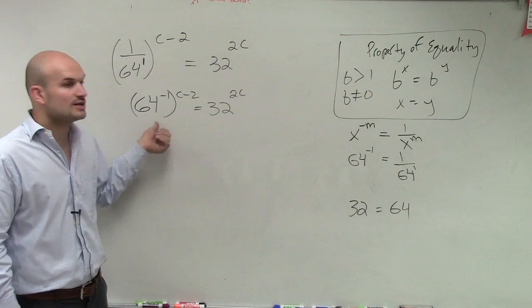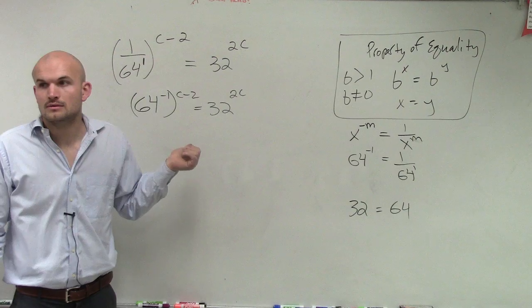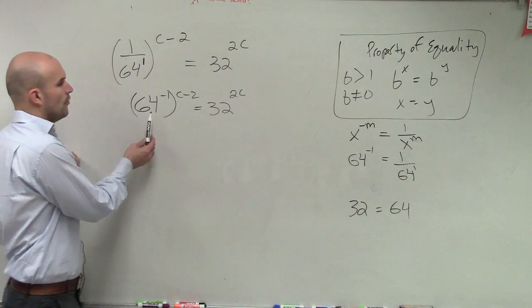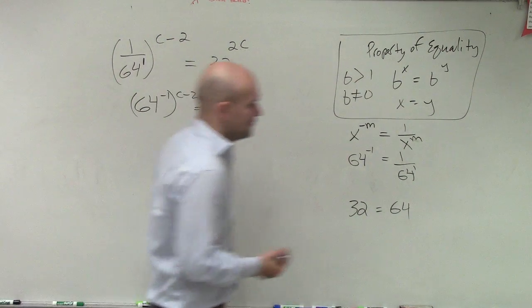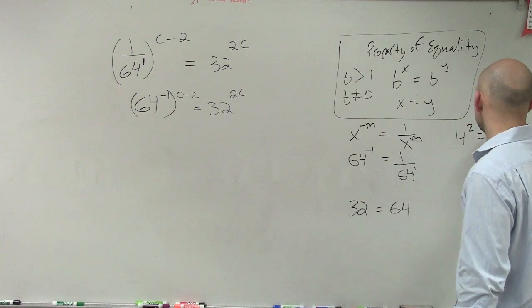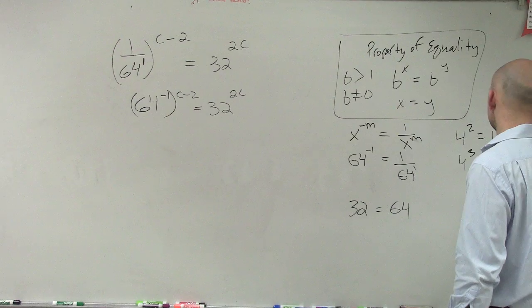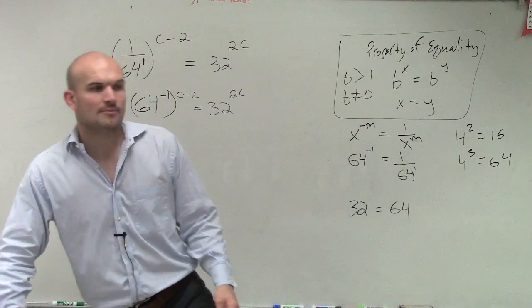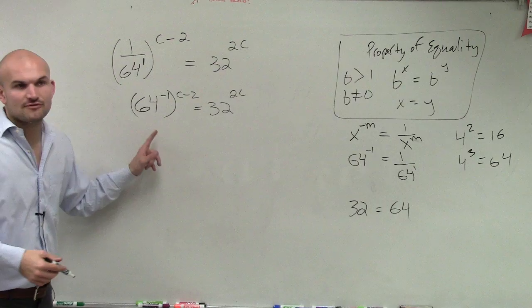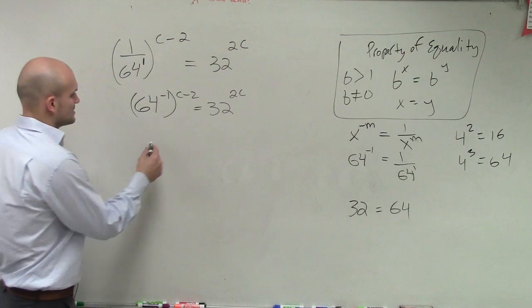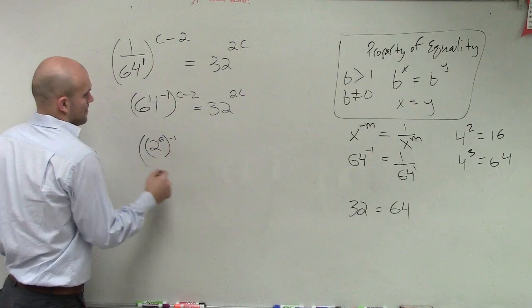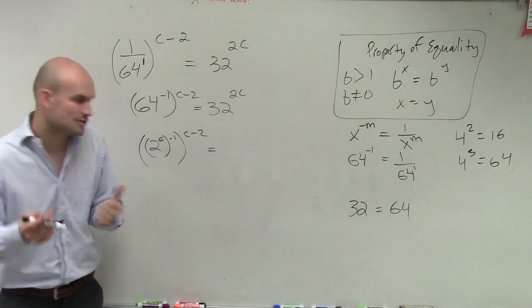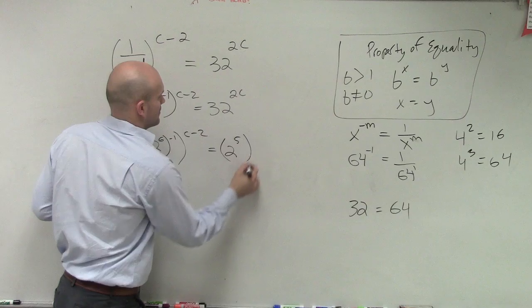I could use 2, right? So I could write 64 as 2 to the what? Well, 4 works for 64 - 4 squared equals 16 and 4 cubed equals 64. The problem is we can't write base 4 for 32. That's why we can't use 4. But we can use base 2. So how could I rewrite 64 as base 2? 2 to the 6th. And how can I rewrite 32? 2 to the 5th.